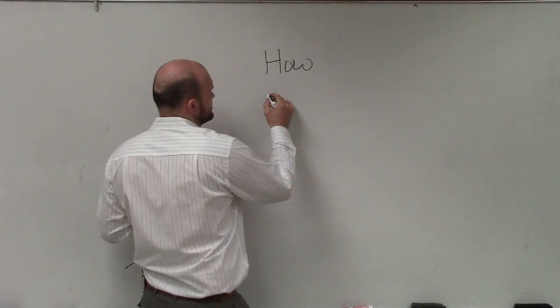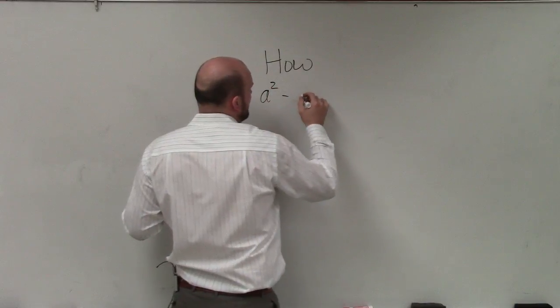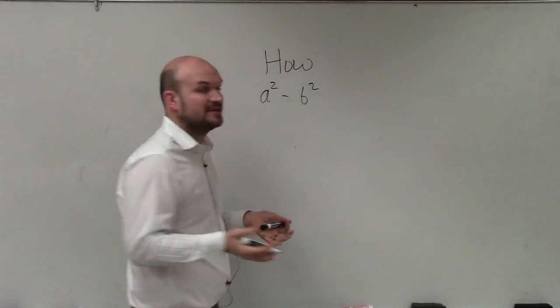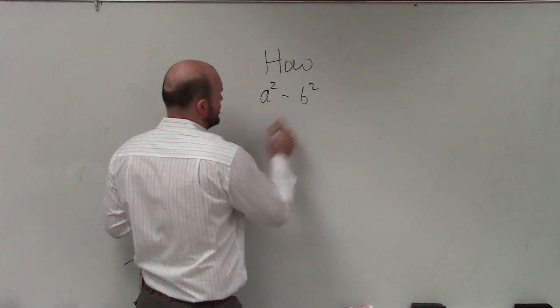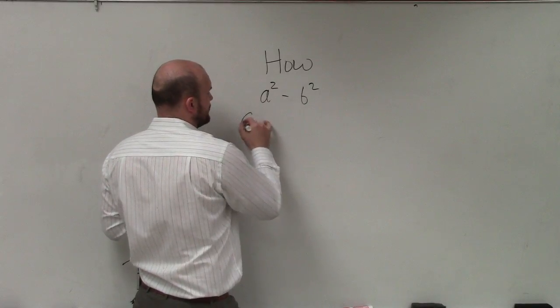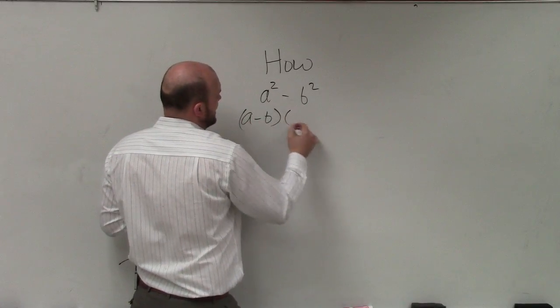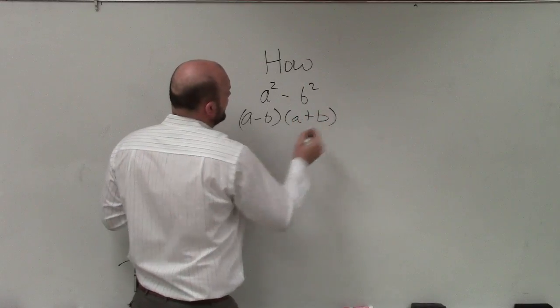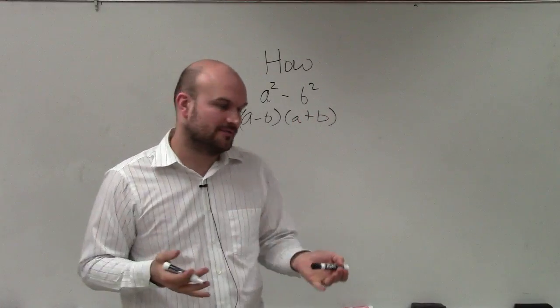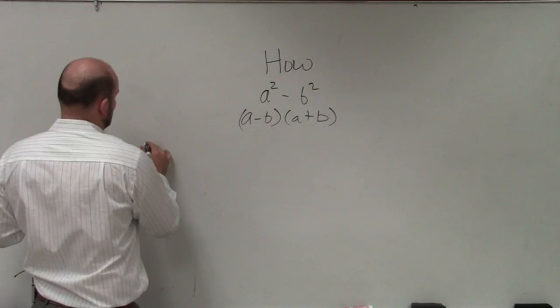Basically, the difference of two squares is when we have a square term minus another square term, then we can factor that using the difference of two squares. The factored form would be a minus b times a plus b. Now, how does this really work with a problem? Well, let's go through some problems.